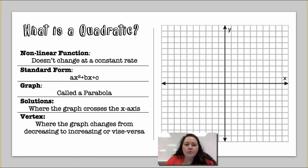Okay, so what is a quadratic? It is a non-linear function. Okay, so that means it does not change at a constant rate. In standard form, it's ax squared plus bx plus c. It's always going to have an x squared if it's a quadratic or something squared.